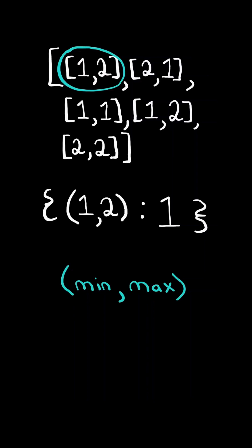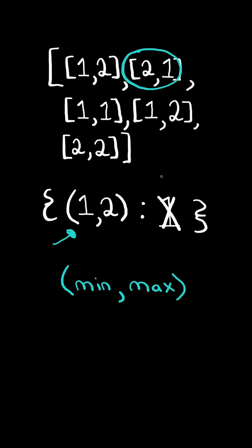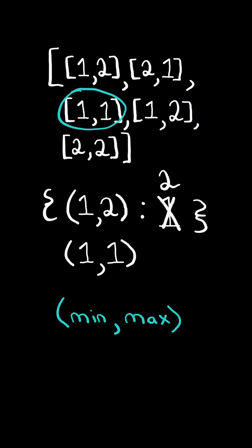In this case, the frequency is one. We then continue to the next element in the list. Notice when we create the tuple, the key already exists in the dictionary with the minimum value one and the maximum value two. So in this case, we increment the count of its frequency, and we continue to the next element.